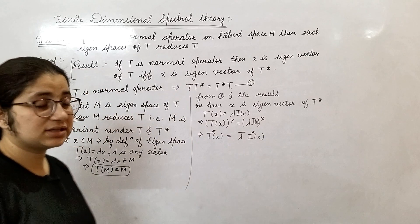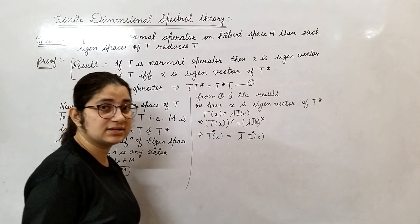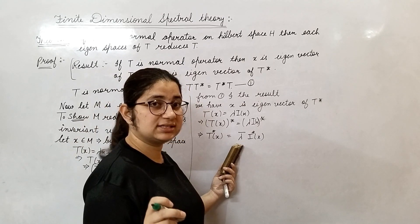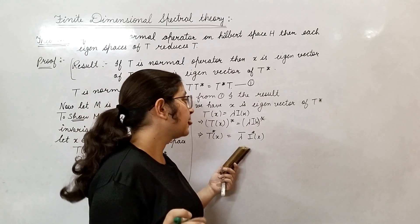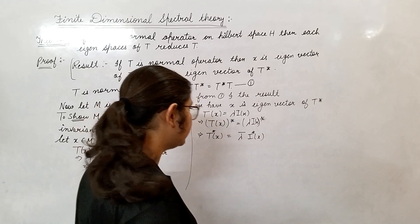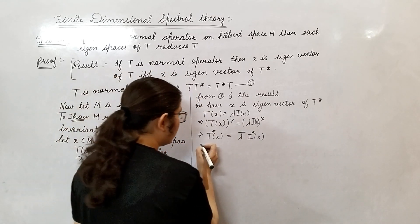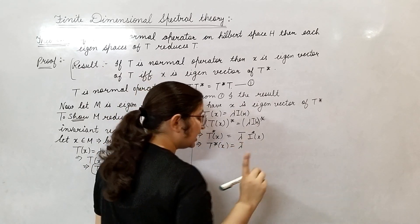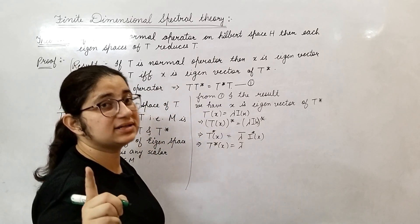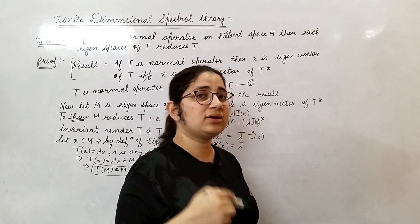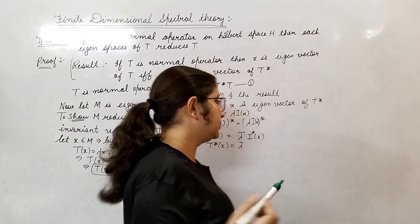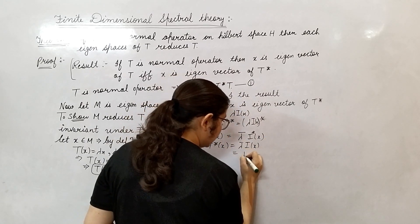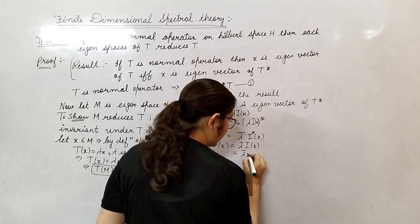I consider both cases: if the scalar field is real, we write lambda directly; if the field is complex, we write lambda bar — there is no problem either way. I have shown that the identity operator I is self-adjoint, meaning the conjugate of the identity operator is the identity itself. So we can write I(x), and this implies T*(x) = lambda bar * I(x) = lambda bar * x.